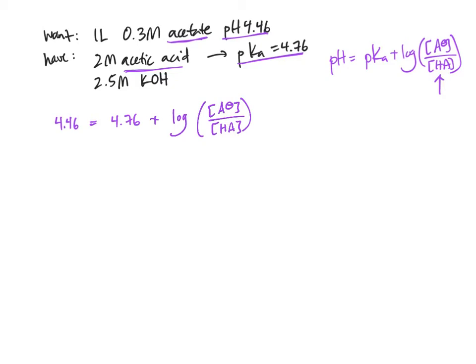If we simplify that, we'll just move 4.76 over to the other side of the equation. We can end up with negative 0.3 equal to the log of the concentration of acetate over the concentration of acetic acid. How can we get to this ratio inside the log? We'll just take the anti-log or 10 to the power of. So let's do 10 to the power of both sides here. 10 to the power of negative 0.3 is equal to the concentration of acetate over the concentration of acetic acid.